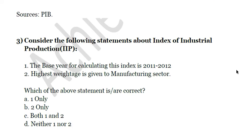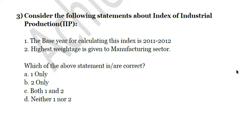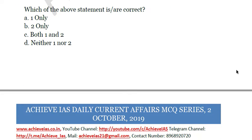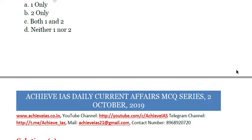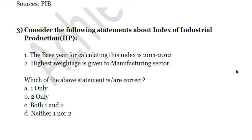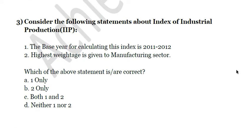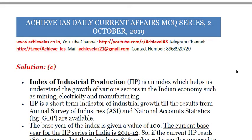The next question: consider the following statements about the Index of Industrial Production. First, the base year for calculating this index is 2011-12. Second, the highest weightage is given to the manufacturing sector. Which of the above statements is correct? Both statements are correct — the answer is C. The base year is 2011-12 and the highest weightage is given to the manufacturing sector, which is expected in an Index of Industrial Production.